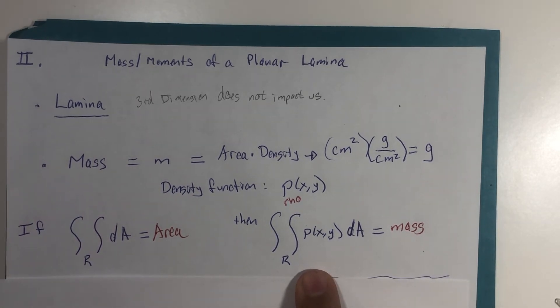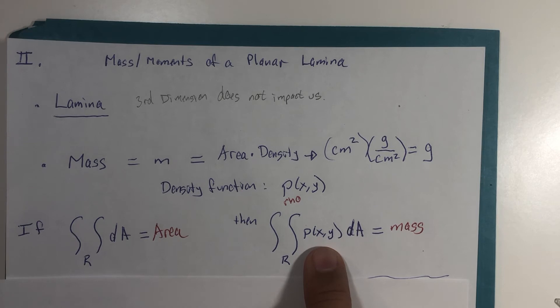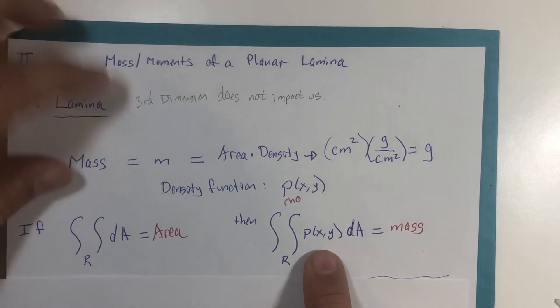This will be our calculation for generating mass. Before, we thought of this as the third dimension and we might calculate volume. What we're using this now is to calculate the mass of a planar lamina, such as maybe a piece of paper.